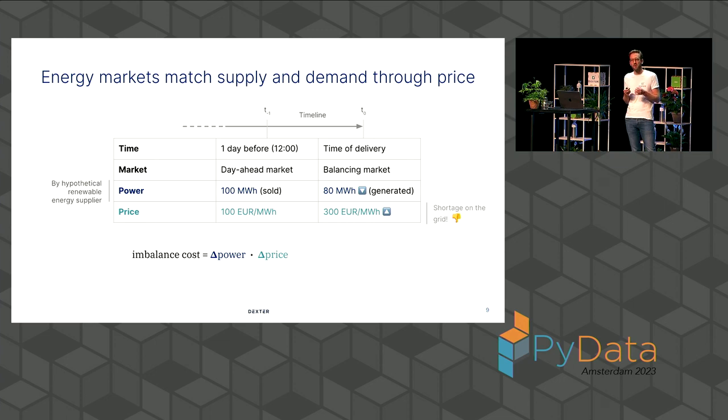And then there's these imbalanced costs that our hypothetical renewable energy supplier incurs. These are the difference in power multiplied by the difference in price. So if we take this example, that's a penalty you get for basically destabilizing the grid. You can view it like that. So if we plug the numbers into our example, we get a difference of 20 megawatt-hours that we have short, and a difference of 200 euros per megawatt-hours, the difference between these two markets that they had in the balancing market. We get a penalty, an imbalance cost, of 4,000 euros for this, only this instant. And this money is going to someone else, usually a fossil fuel-powered thermal plant, that actually is going to compensate for this shortage. And they get a reward of 4,000 euros for helping balance the grid.